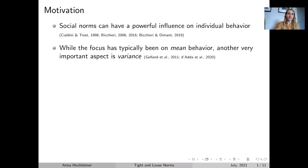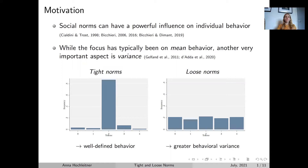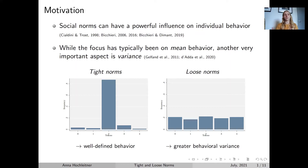As the title says, we're looking at tight and loose norms. Following previous work by Michelle, we define tight norms as a situation where behaviour is very well defined — a situation in which we have almost no variance and, as you can see in the picture, most people behave in a similar way. By contrast, under loose norms we understand a situation with much greater behavioural variance. Comparing those two pictures, the mean and median behaviour is identical, but what differs is the distribution around this mean or median.